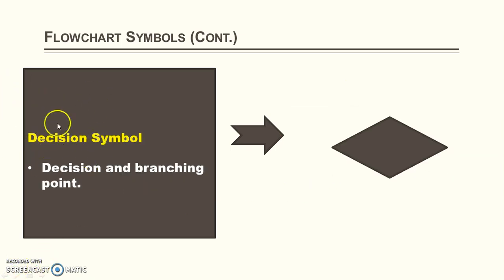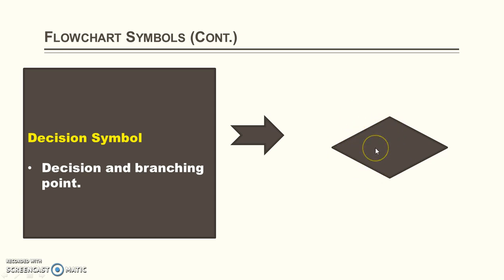The next symbol is the decision symbol, represented using a diamond shape. This is the branching point for decisions. There are situations in which you have to decide whether to perform one action or another based on some condition. If your condition is true, there is a sequence of steps you have to follow; otherwise, you have to follow some other steps. You can write the condition within the diamond shape. These are the basic symbols used to draw a flowchart.